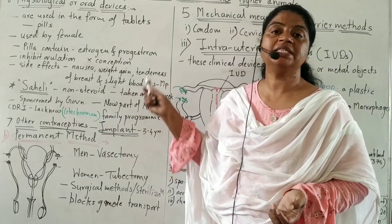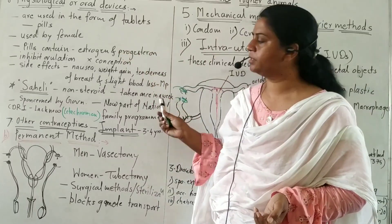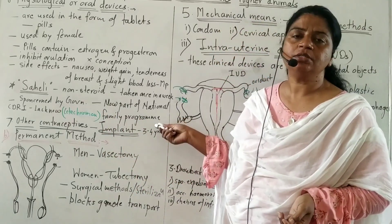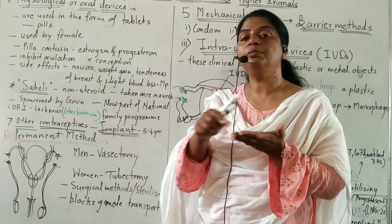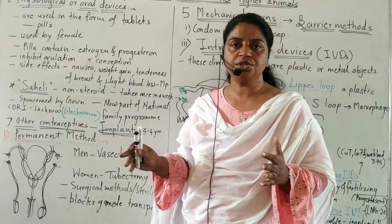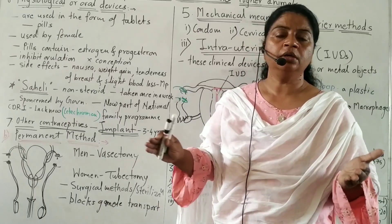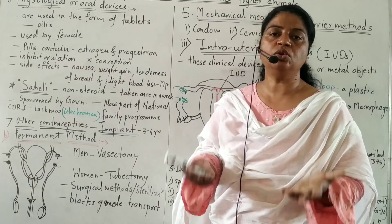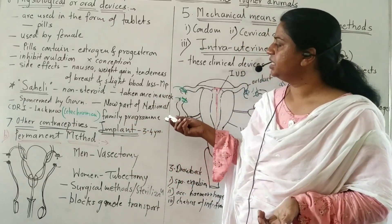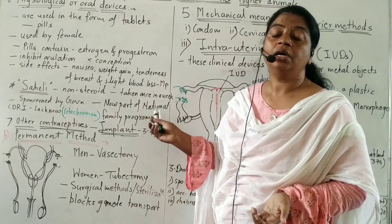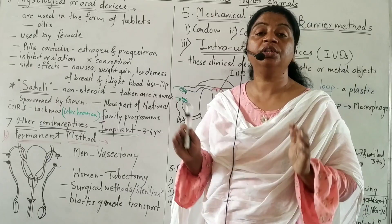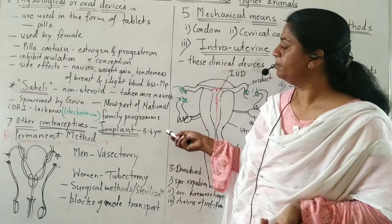The implant releases estrogen and progesterone, which suppress FSH and LH, resulting in no ovulation, no ovum, no fertilization, no conception, and no pregnancy. The implant prevents pregnancy for a longer period — approximately three to four years.